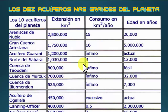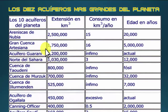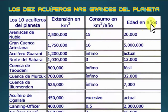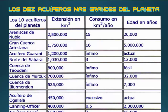Esta tabla muestra los 10 acuíferos más grandes del planeta con sus formaciones, ubicación y extensión en kilómetros cúbicos. La arenisca de Nubia tiene 2.500.000 km³, la Gran Cuenca Artesiana 1.750.000 km³, y así sucesivamente de mayor a menor. El consumo en kilómetro cúbico por año es muy poco con relación a su extensión, lo cual es bueno para la permanencia humana en la Tierra. La edad aproximada de estos acuíferos va desde 12.000 años hasta 5 millones de años, mostrando la antigüedad de estas formaciones.